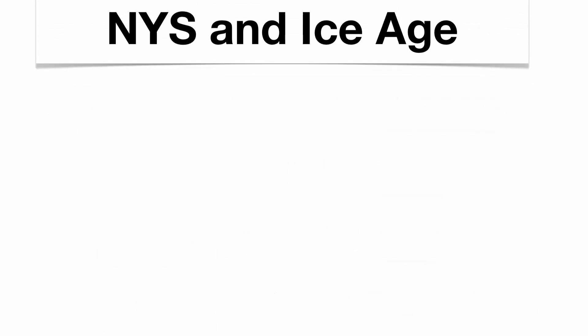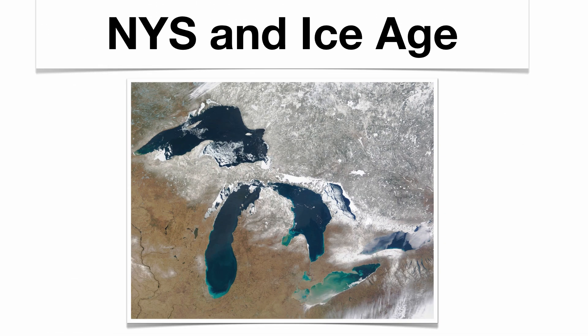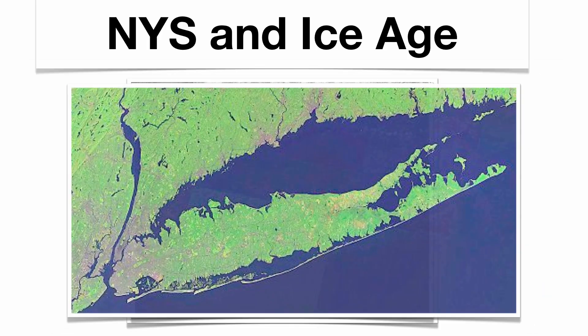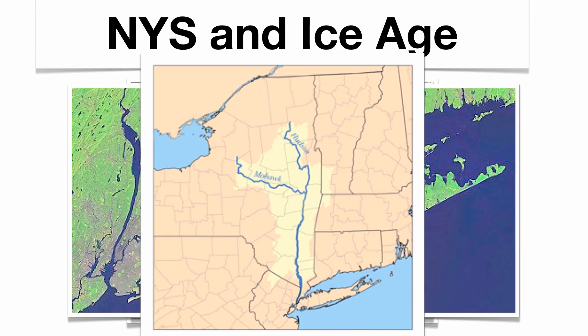The Great Lakes — two of them border New York, that's Lake Ontario and Lake Erie — are all U-shaped in nature. The Finger Lakes, again, are U-shaped in nature. Long Island is partially unsorted material, such as a moraine — there are actually two moraines in Long Island, the Ronkonkoma Moraine and the Harbor Hill Moraine. Part of it is sorted in the form of outwash, because part of Long Island formed when the glacier melted, which produced outwash, which is sorted. And finally, the Hudson River Valley and the Hudson River are somewhat U-shaped in nature as well.